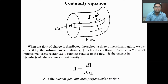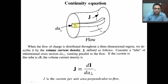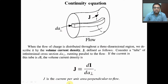Suppose we are considering a conductor and charge is flowing through that conductor. Here J is called the volume current density. If we consider an elemental tube where dA⊥ means the perpendicular cross-sectional area of this tube and the current flowing through this tube is dI, then dI divided by dA⊥ will give us J. So the definition of J is the current per unit area perpendicular to the flow of the charge.